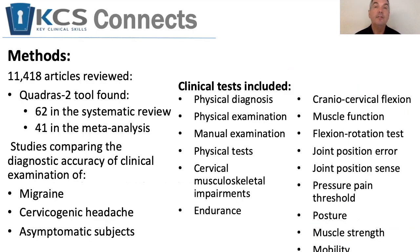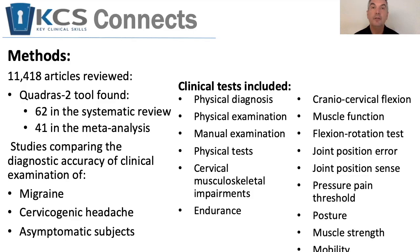The methods used in this study: they started off with over 11,000 articles and used the QUADAS-2 tool to pare that down to 62 articles for their systematic review and 41 papers for the meta-analysis. These are all studies that looked at the diagnostic accuracy of clinical testing for migraine, cervicogenic headache, and asymptomatics. Some of the tests they looked at are listed in the table on your right-hand side.